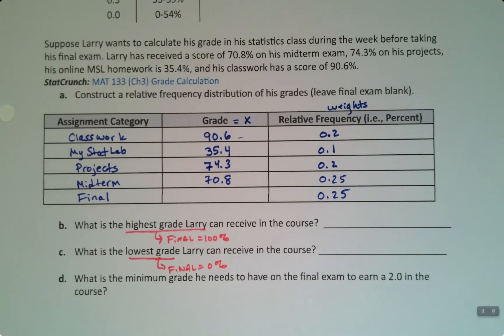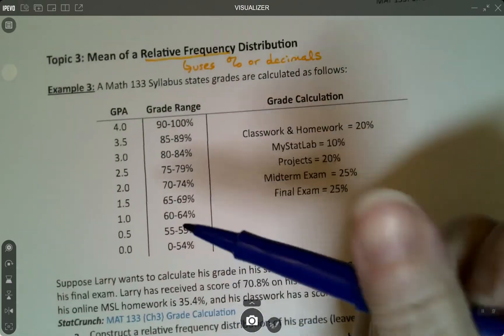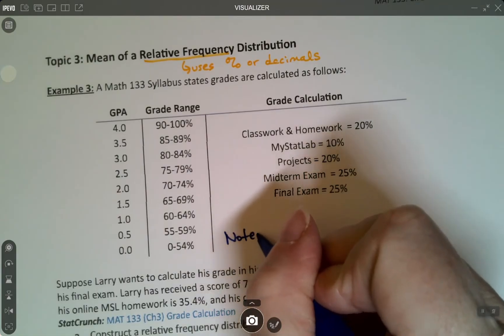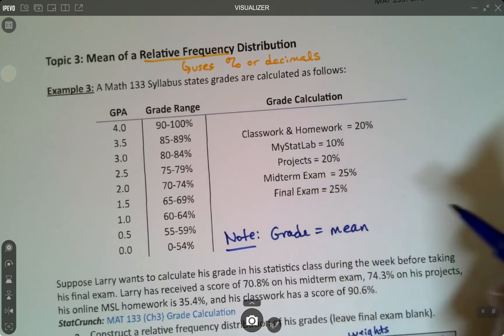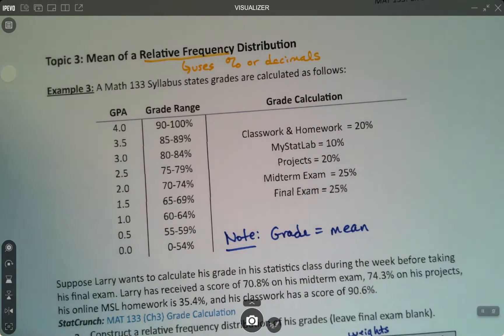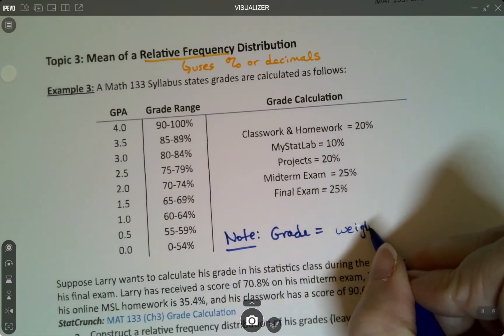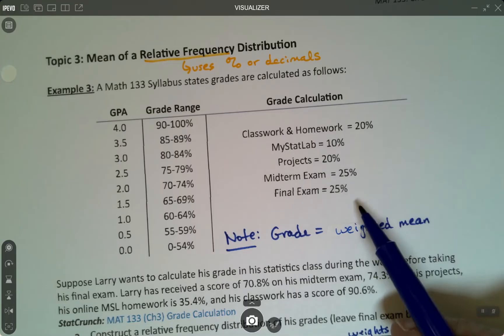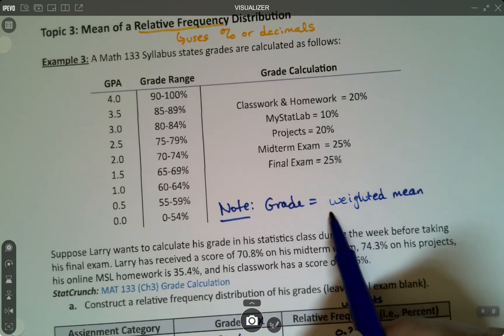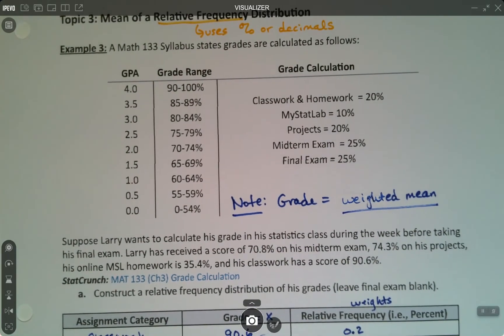We're going to go to StatCrunch and find the mean as we have been doing, because your grade in a class is the mean. As a matter of fact, maybe I should say that somewhere. Let me just write, note, grade is the mean. The weighted mean, I should say. And that's true for all of your classes. It's just that sometimes they do the weights with percentages, sometimes with points. But your grade is your weighted mean.